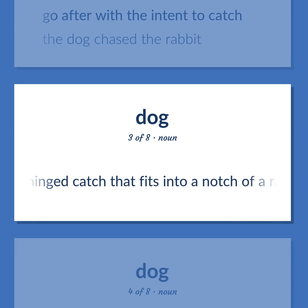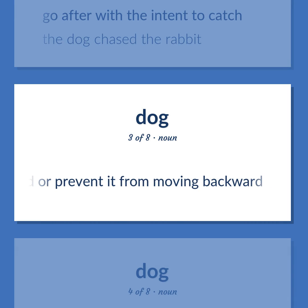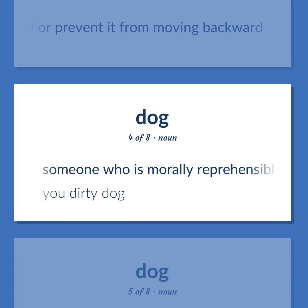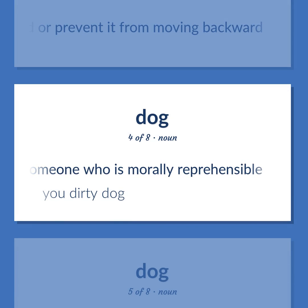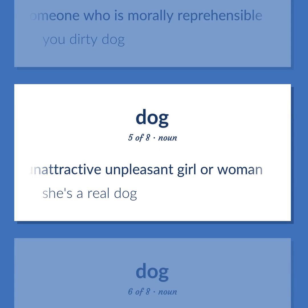Dog: A hinged catch that fits into a notch of a ratchet to move a wheel forward or prevent it from moving backward. Someone who is morally reprehensible — you dirty dog. A dull, unattractive, unpleasant girl or woman — she's a real dog.